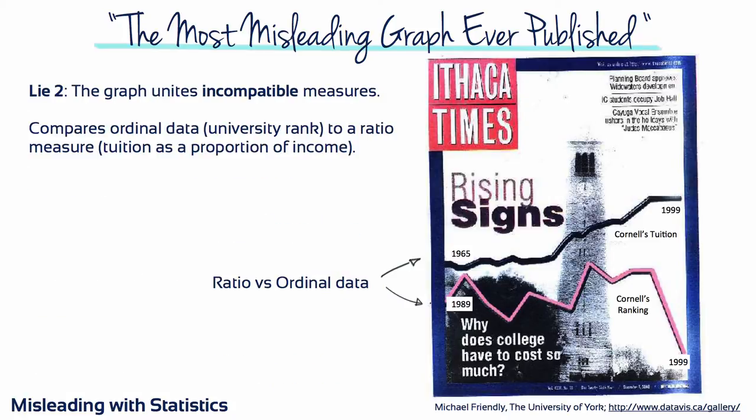Lie number two: the graph unites incompatible measures. This lie compares an ordinal measure — university rank — to a scale measure — tuition as a proportion of income. The two ways of measuring a variable are incompatible, yet they're treated as if they were the same. This lie also helps us set up and anticipate the next lie.